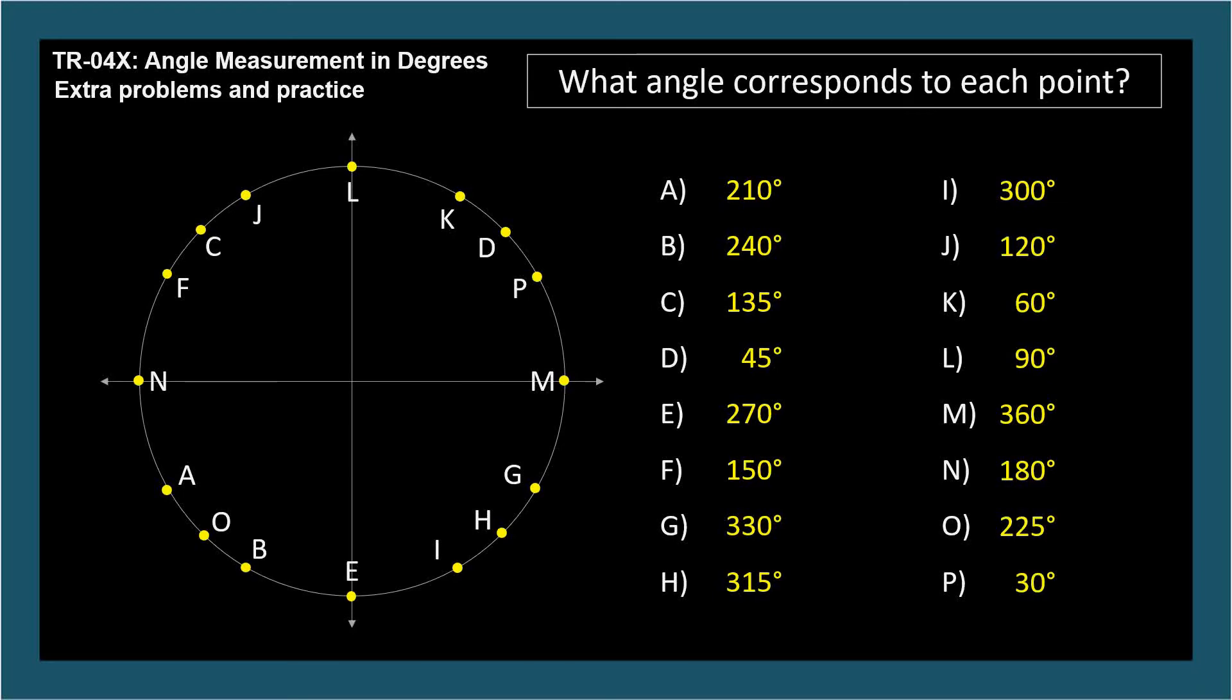Sketch out a circle with these points and practice. Given an angle, identify the corresponding point, and for each point, know the corresponding angle. Use the quadrantal angles as landmarks and add or subtract acute common angles to reach the point of interest.